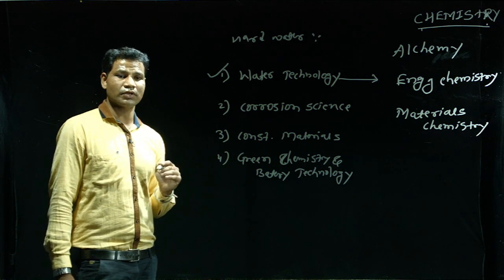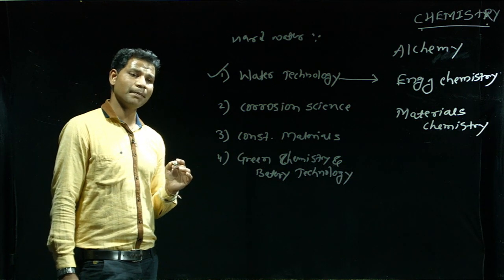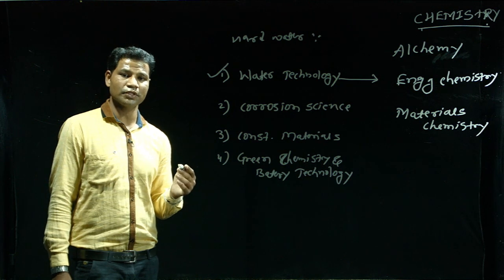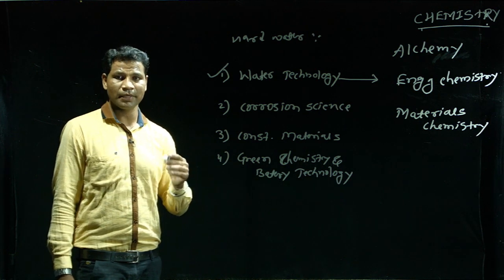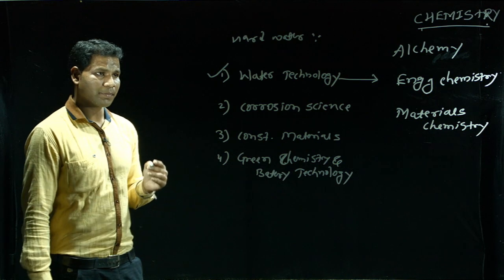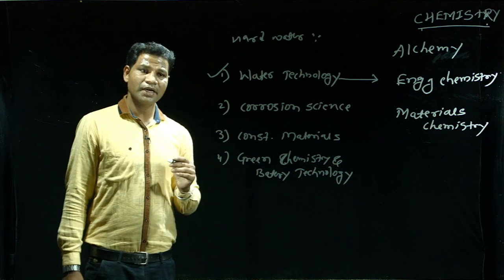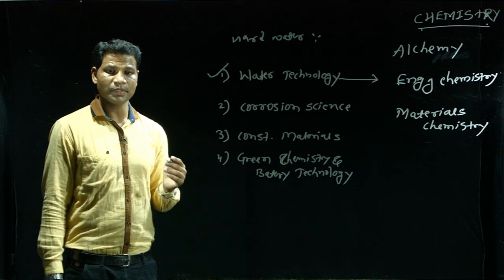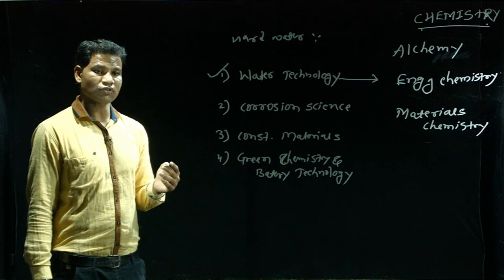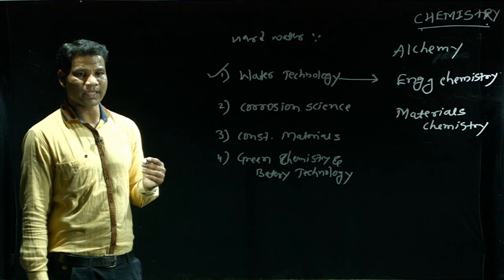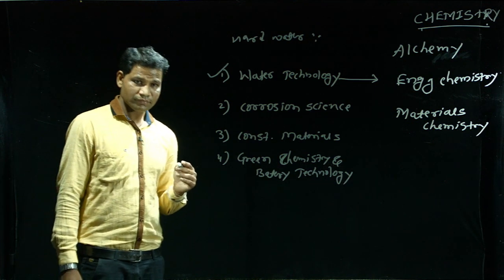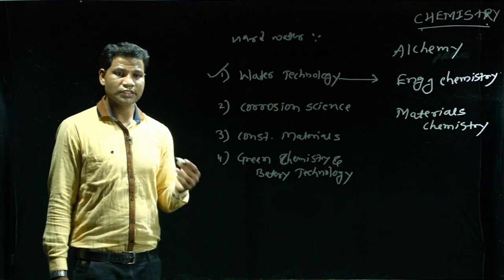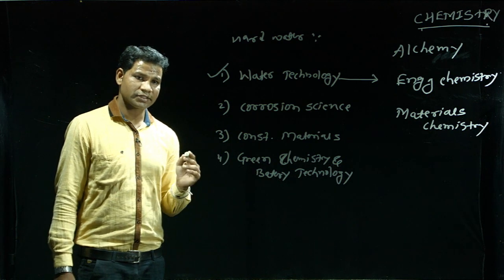There are two types of hardness of water: temporary hardness and permanent hardness. Temporary hardness is due to the presence of carbonates and bicarbonates of calcium and magnesium, and it can be easily removed. Permanent hardness is due to the presence of chlorides, sulphates, and nitrates of calcium and magnesium. It can be removed by softening processes like the lime soda process, zeolite process, and ion exchange method.